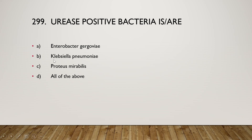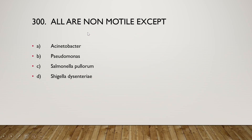The next question is: urease-positive bacteria is/are (A) Enterobacter gergoviae, (B) Clostridium ammoniagenes, (C) Proteus mirabilis, or (D) all of the above. The right answer is option D — all of the above are urease-positive bacteria.